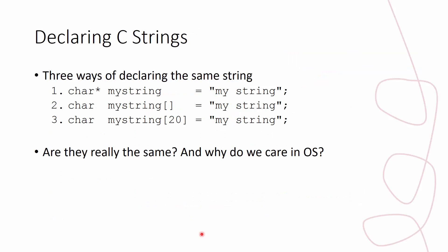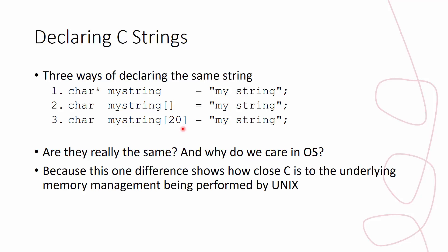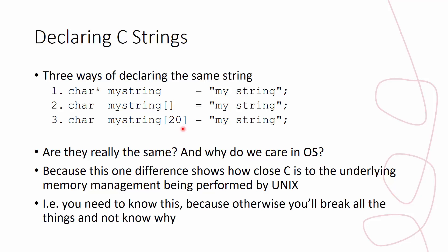There are three different ways to declare strings in C. The first — with an asterisk — is very commonly seen in testing programs. Then there's one with square brackets and no asterisk, and finally one with square brackets and a number. Are they the same, since they all declare a string? And why do we care in operating systems? This difference shows how close C is to the underlying memory management performed by Unix, in regards to how it stores character data inside virtual memory allocated for a given process. You need to know this, because otherwise you're going to break everything.